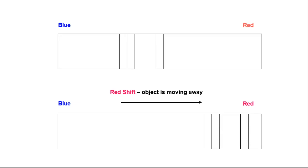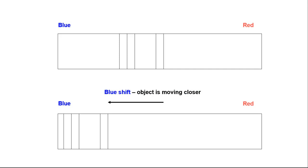Red shift: object is moving away. Blue shift: object is moving closer. No shift: object is moving with the same speed.